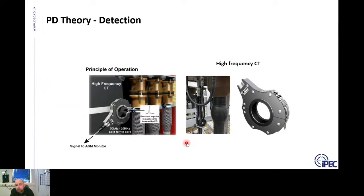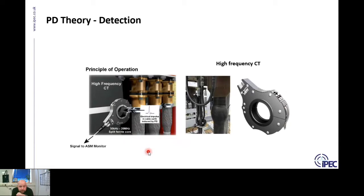For underground cables we use high frequency current transformers — HFCTs. They're pretty industry standard for detection of PD in underground cables. Each HFCT is different and must be considered individually. Recently IPEC have upgraded our HFCTs to a much wider bandwidth; our HFCT response is now up to around 70 megahertz, making it also quite effective at detecting switchgear PD at the same time as cable PD.